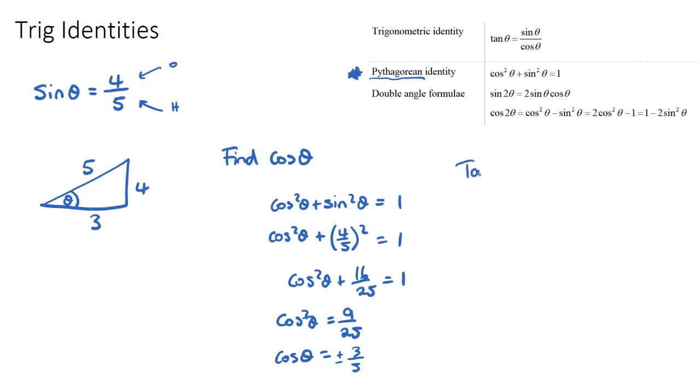Now tan θ. Let's have a look at our example. In this one it would be opposite over adjacent which is 4/3. And the trig identity for tan θ is sin θ over cos θ. And if we think about what sin θ was, sin θ was 4/5.